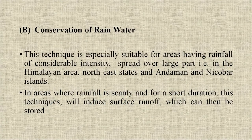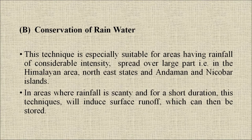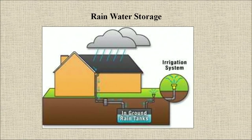The second technique is conservation of rain water, which is specially suitable for areas having rainfall of considerable intensity spread over large parts — such as the Himalayan area, northeast states, and Andaman and Nicobar Islands. In areas where rainfall is scanty and for a short duration, this technique will induce surface runoff which can then be stored for irrigation purposes.